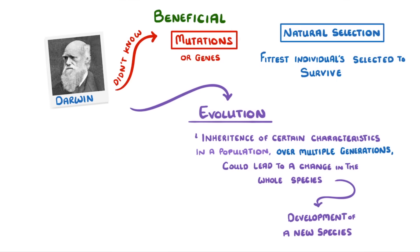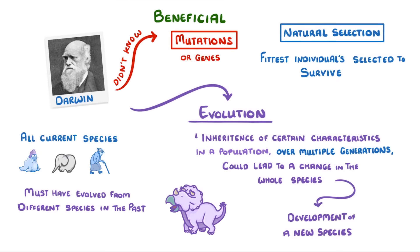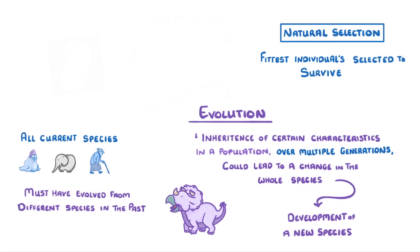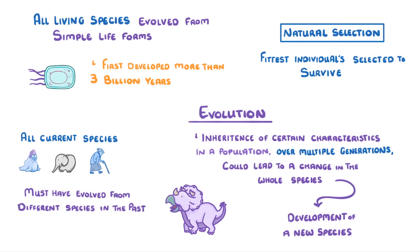This means though that all current species must have evolved from different species sometime in the past. And if we take it back far enough, we can see that the theory of evolution by natural selection implies that all living species must have evolved from the simple life forms that first developed more than three billion years ago.